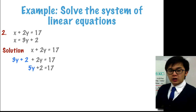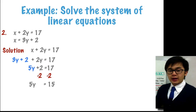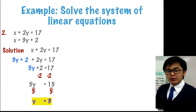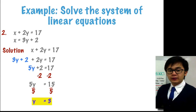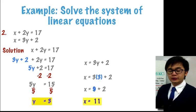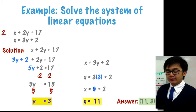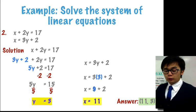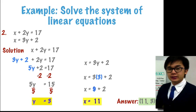Solving for the value of y, we subtract 2 from both sides, leaving 5y is equal to 15. Dividing both sides by 5, y is equal to 3. Now that we have found y, we find x using line 2, which is x is equal to 3y plus 2, and replace y by 3. Simplifying, x is equal to 11. The solution of this linear system is (11, 3). That's how we use the substitution method in solving a linear system.